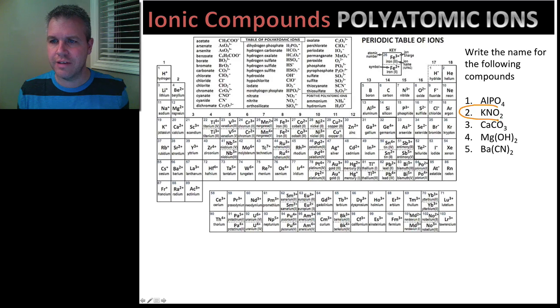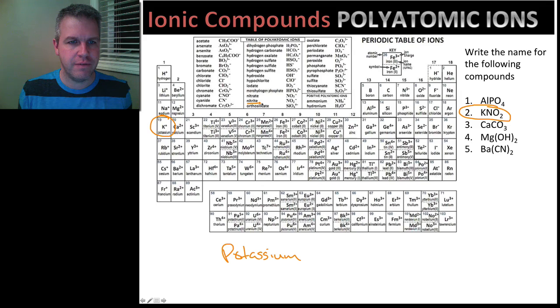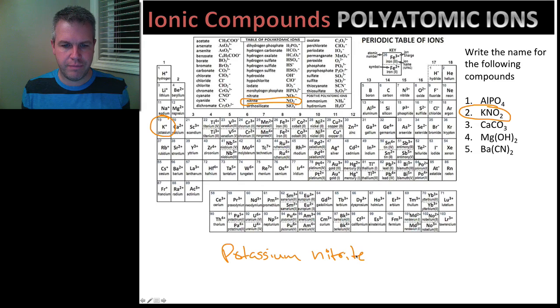Go on to our second example. KNO2. So we know that K is potassium. Right here. KNO2, potassium. And then NO2 is right here. Nitrite. So this is potassium nitrite.